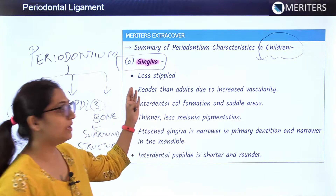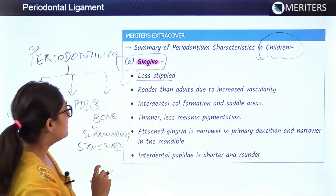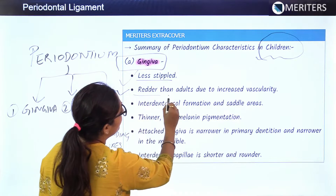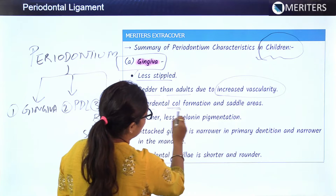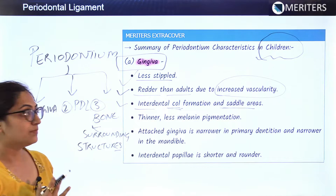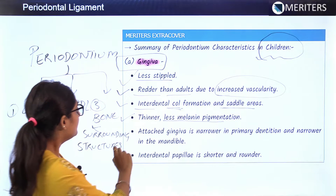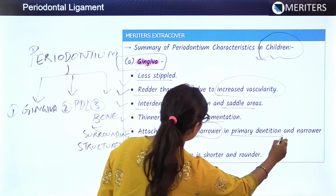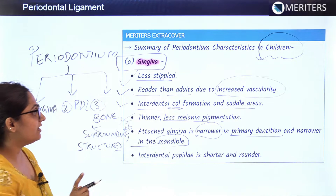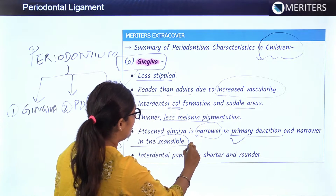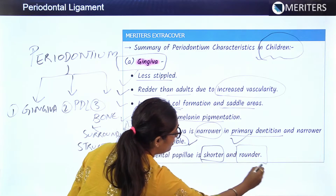Beginning with the gingiva in children: it is less stippled, more vascular and redder than adults due to increased vascularity. Interdental col formation and saddle areas are seen; it is thinner with less melanin pigmentation. The attached gingiva is narrower in primary dentition and narrower in the mandible. The interdental papilla is shorter and rounder in children.